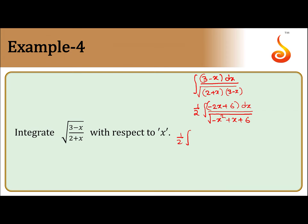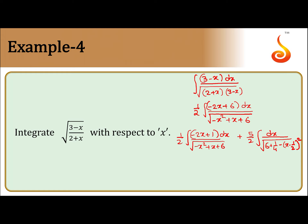We split the integral into two parts: 1/2 integral of (-2x plus 1) dx over the square root of (-x² plus x plus 6), and the leftover part is 5/2 integral of dx over the square root of (6 plus 1/4 minus (x minus 1/2)²), converting to perfect square form where the 1/4 terms cancel.